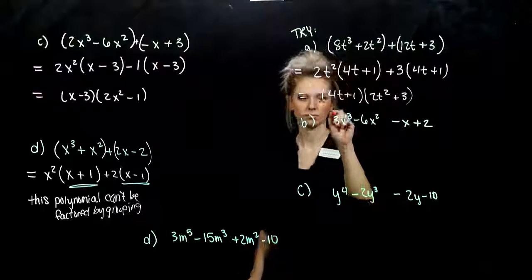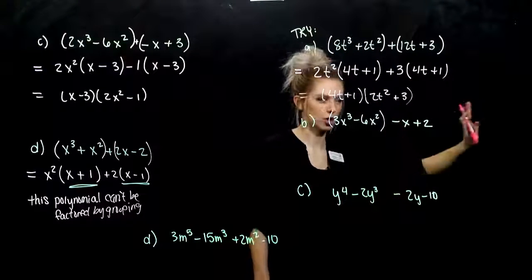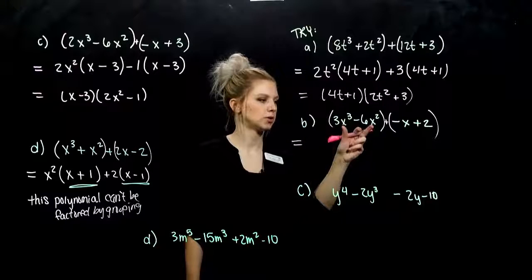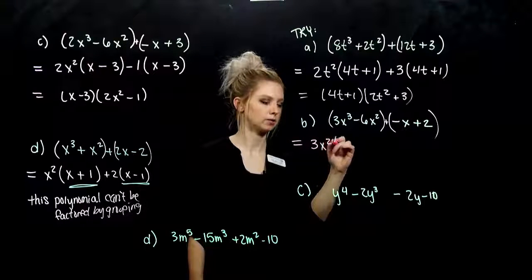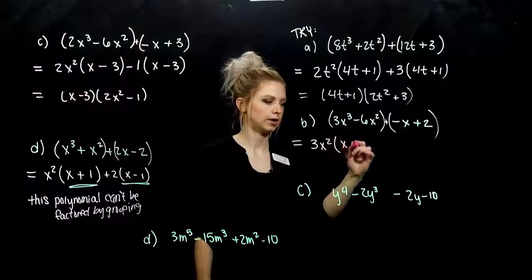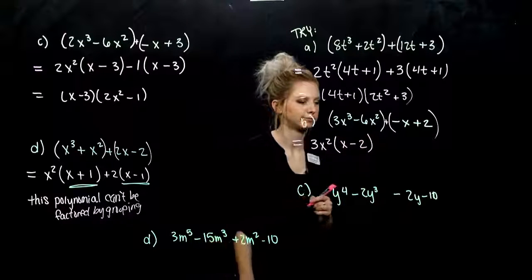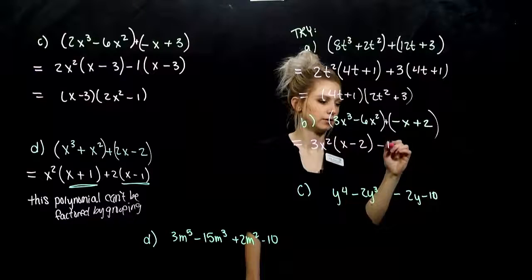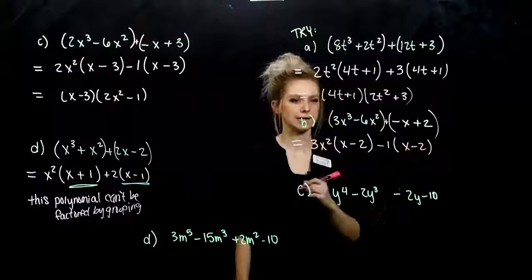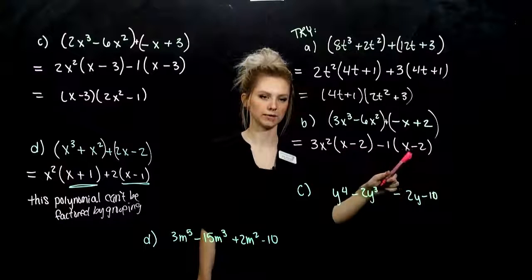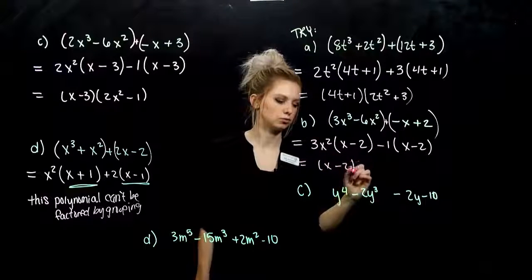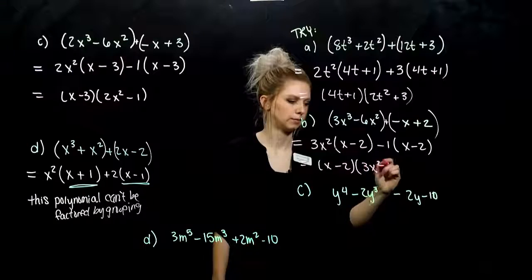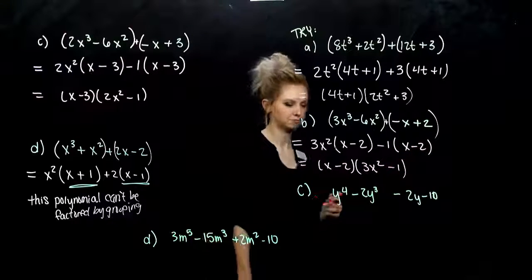For the second one, the third term is negative, so that needs to go with the term — add a little plus in there. Common between the first two: 3x squared. We're left with negative 1x minus 2. We're trying to make these match exactly — they're opposites, so a negative needs to come out of that term; everything will change sign. Common between these two: x minus 2. What's left from the first term? 3x squared. From the second: negative 1. Not so bad.